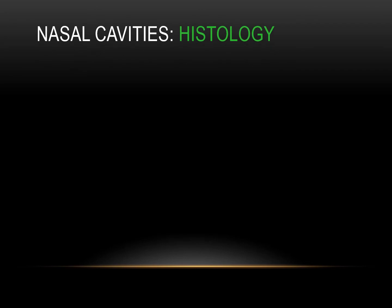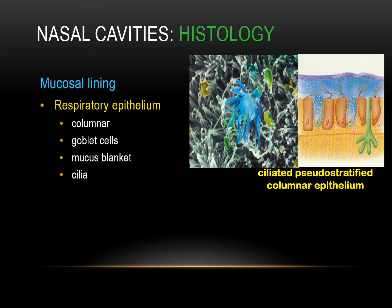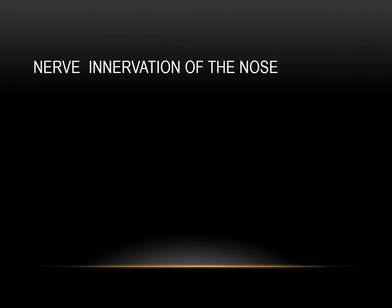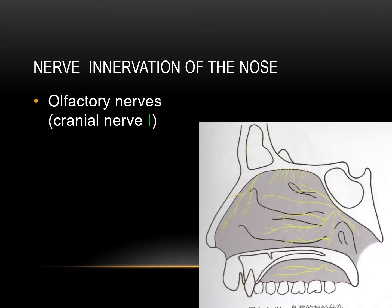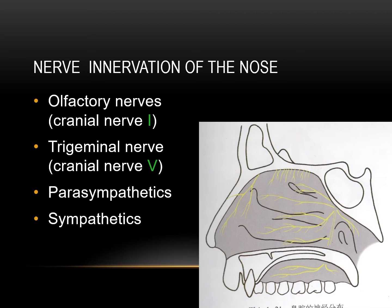Regarding nasal cavity histology, the mucosal lining is respiratory epithelium formed of columnar cells, goblet cells, a mucus blanket, and cilia. There is also the olfactory epithelium, a small area near the roof. The nerve innervation of the nose is formed by the olfactory nerve, cranial nerve number one; the trigeminal nerve, cranial nerve number five; and parasympathetics and sympathetics.